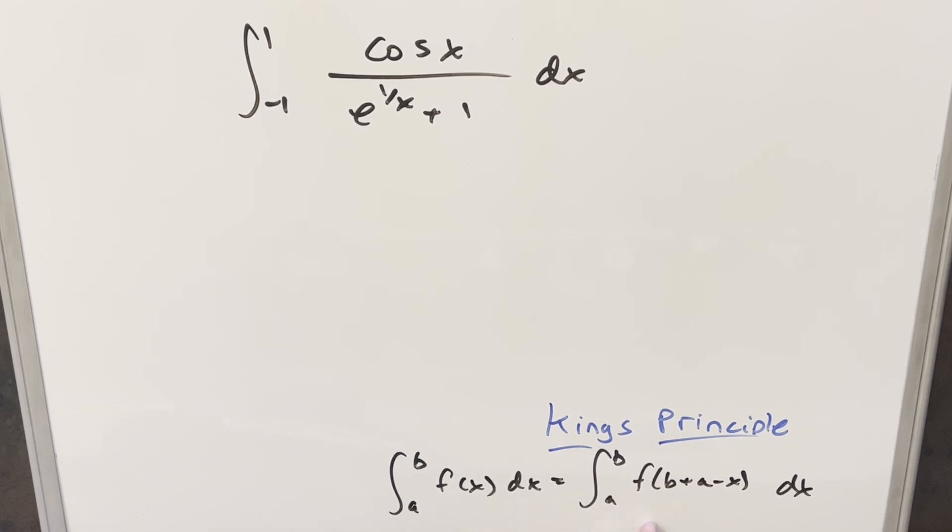And as you can see on the board, I already have the King's Principle on the board, so we kind of know which method I'm going to use. We want to use this.